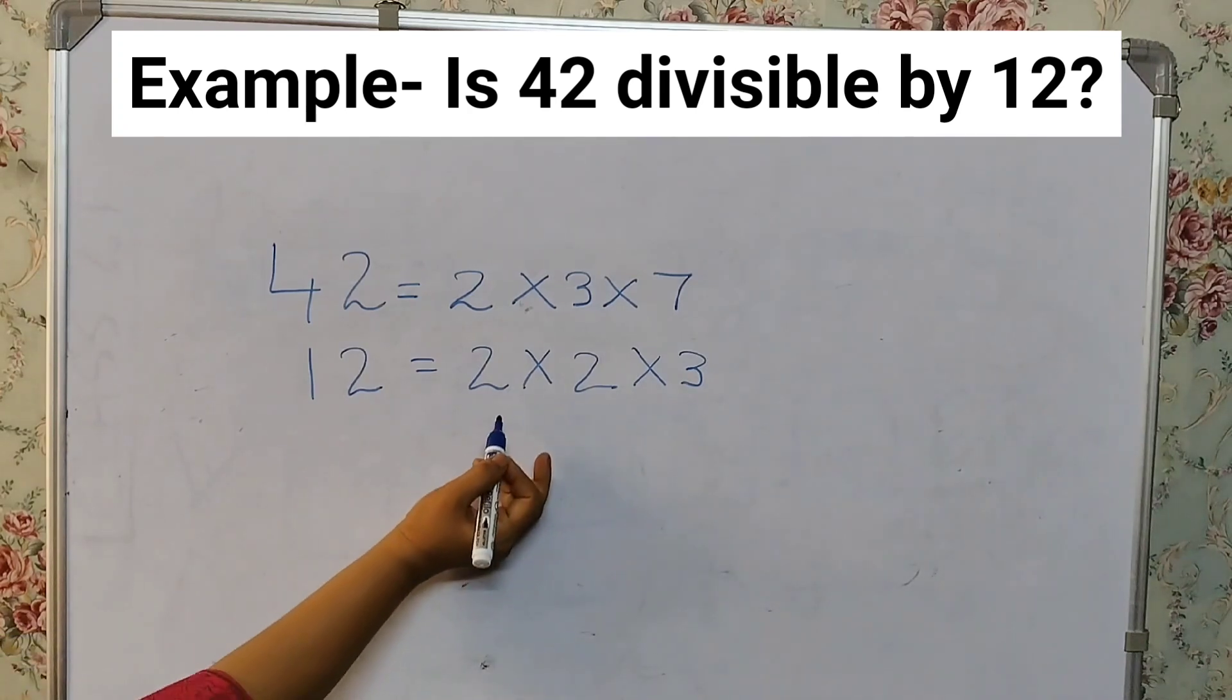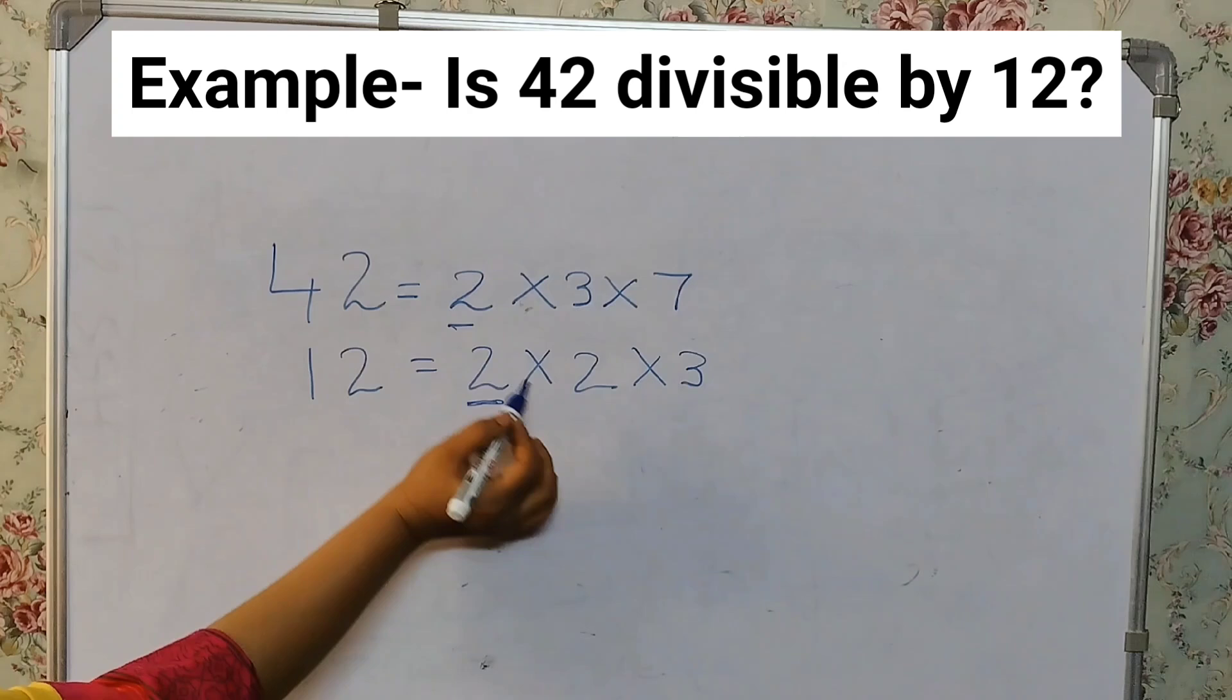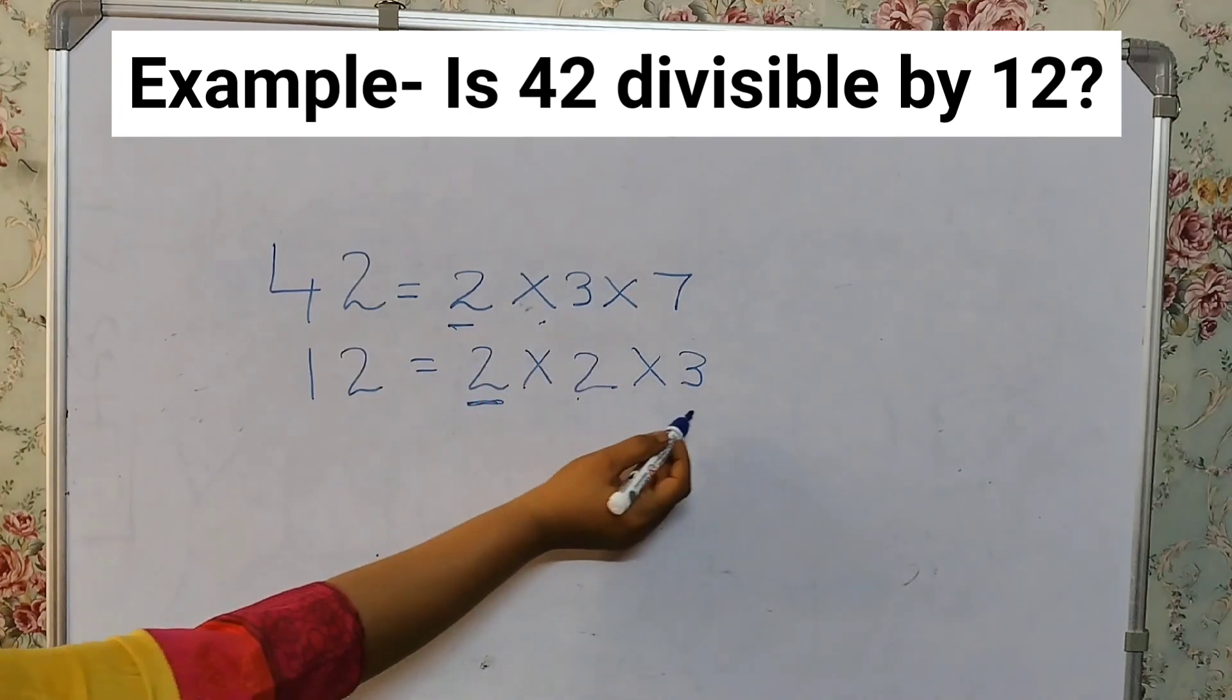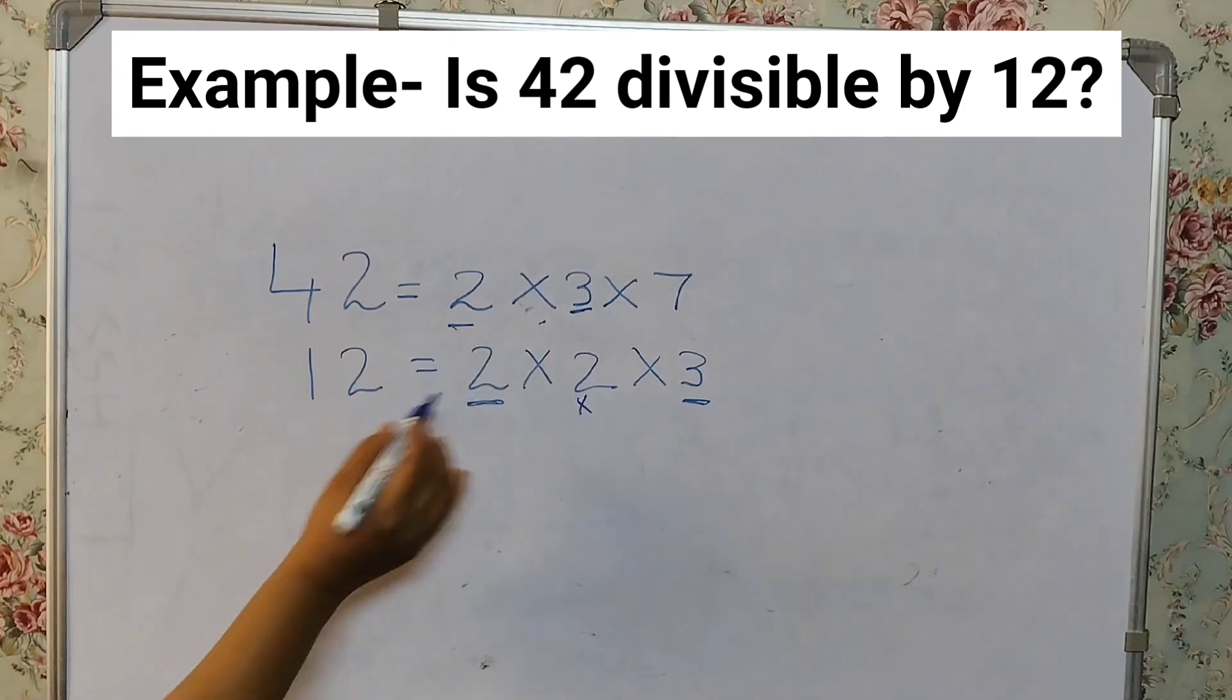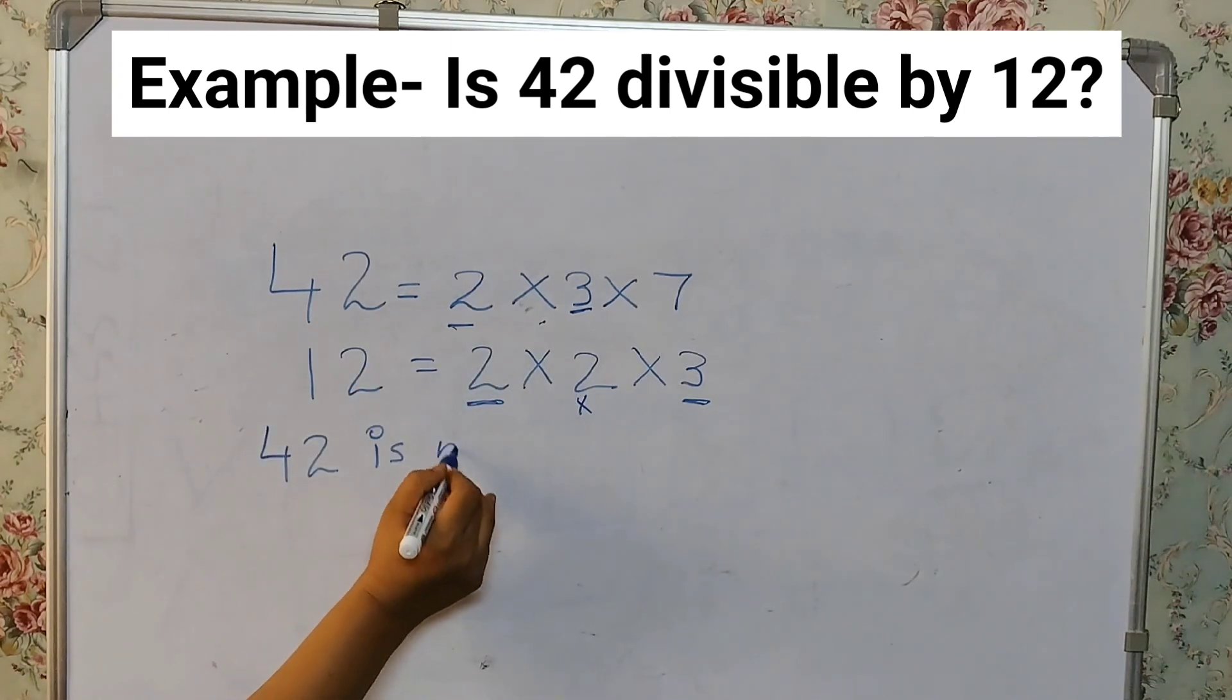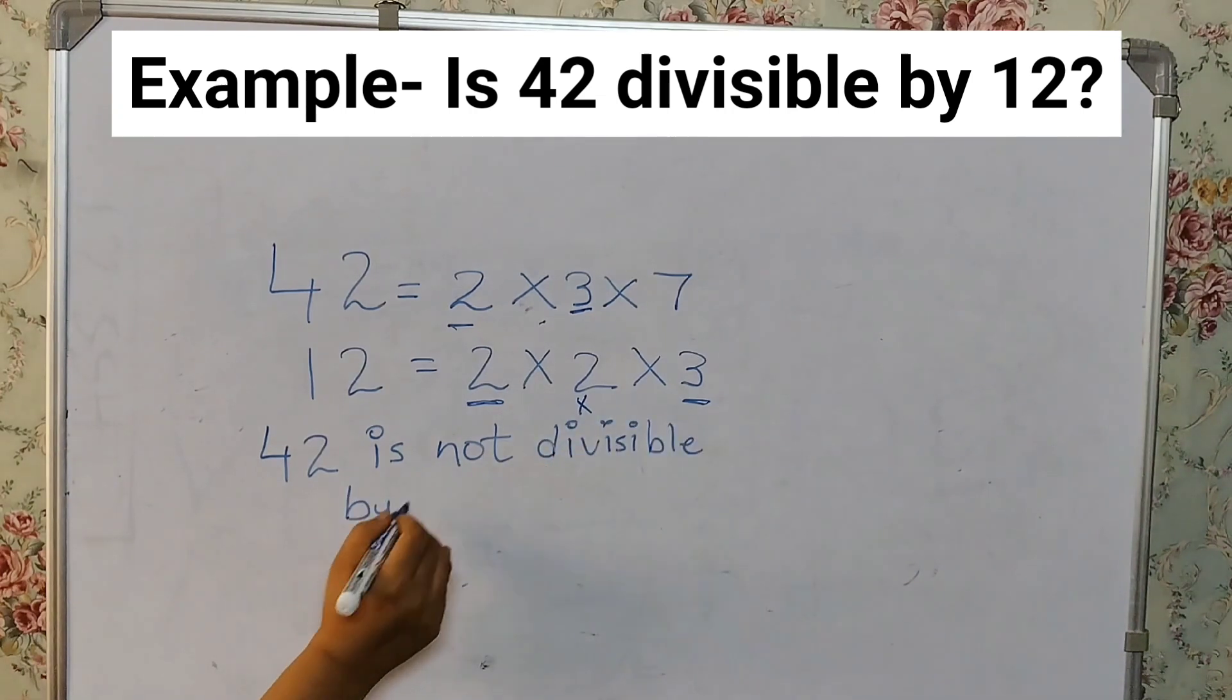Now, we will check if all these factors are there in 42. So we have one 2, yes. The second 2 is missing here, it is not there. 3 is there, right? But this 2 is missing. That means 42 is not divisible by 12.